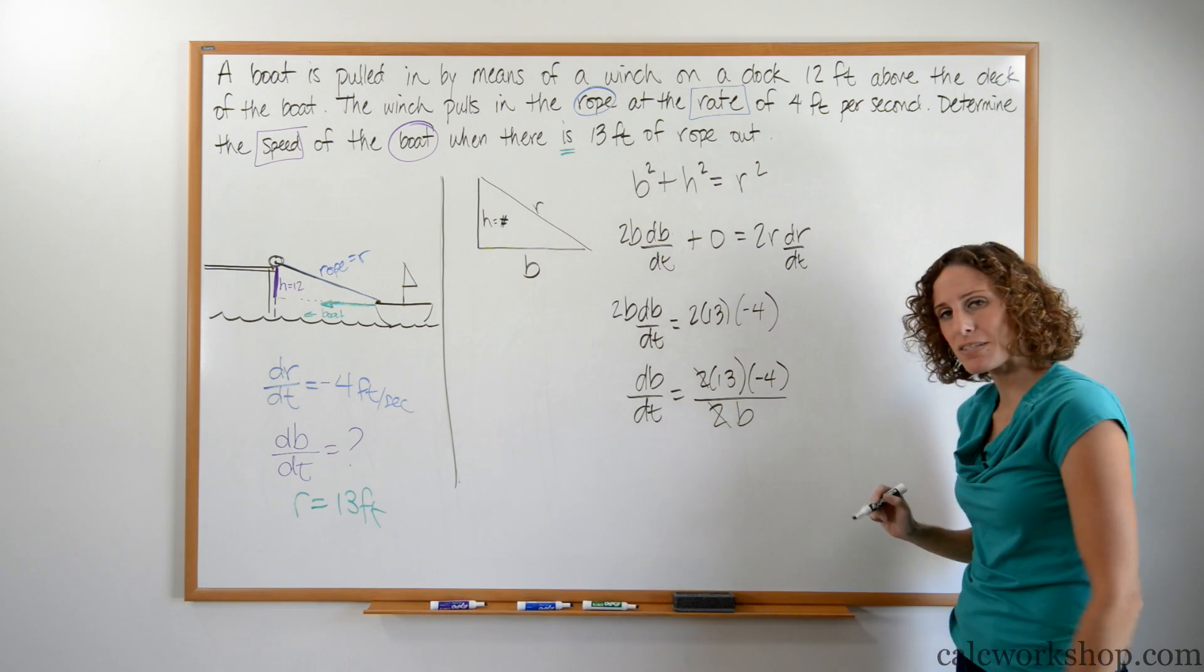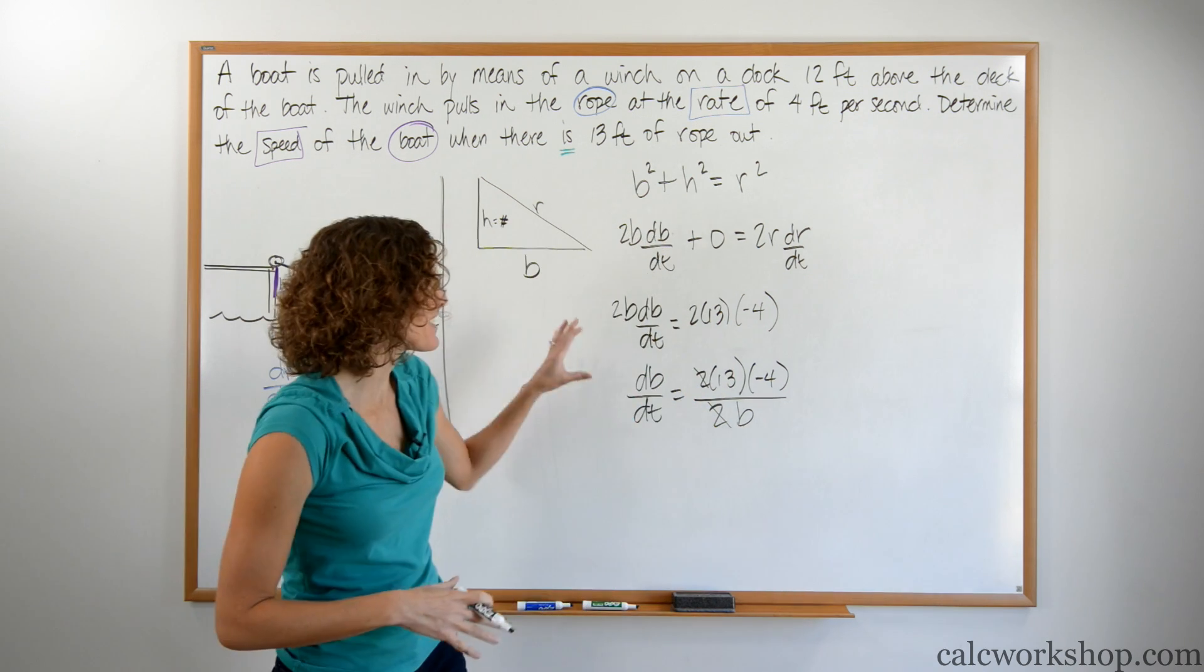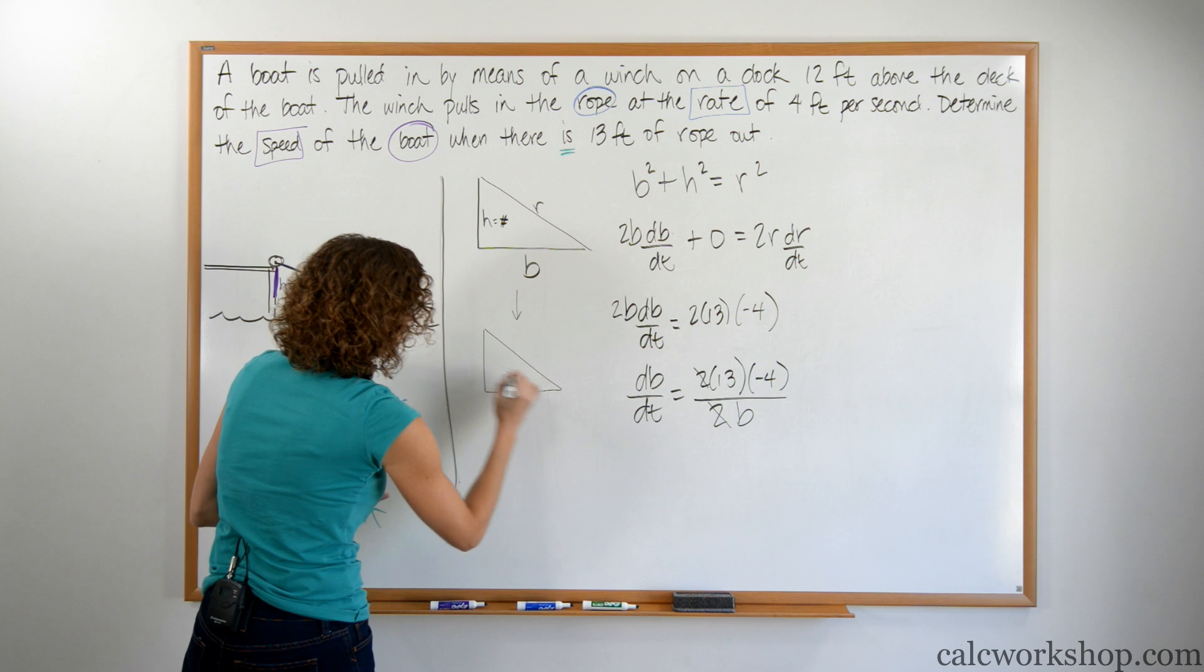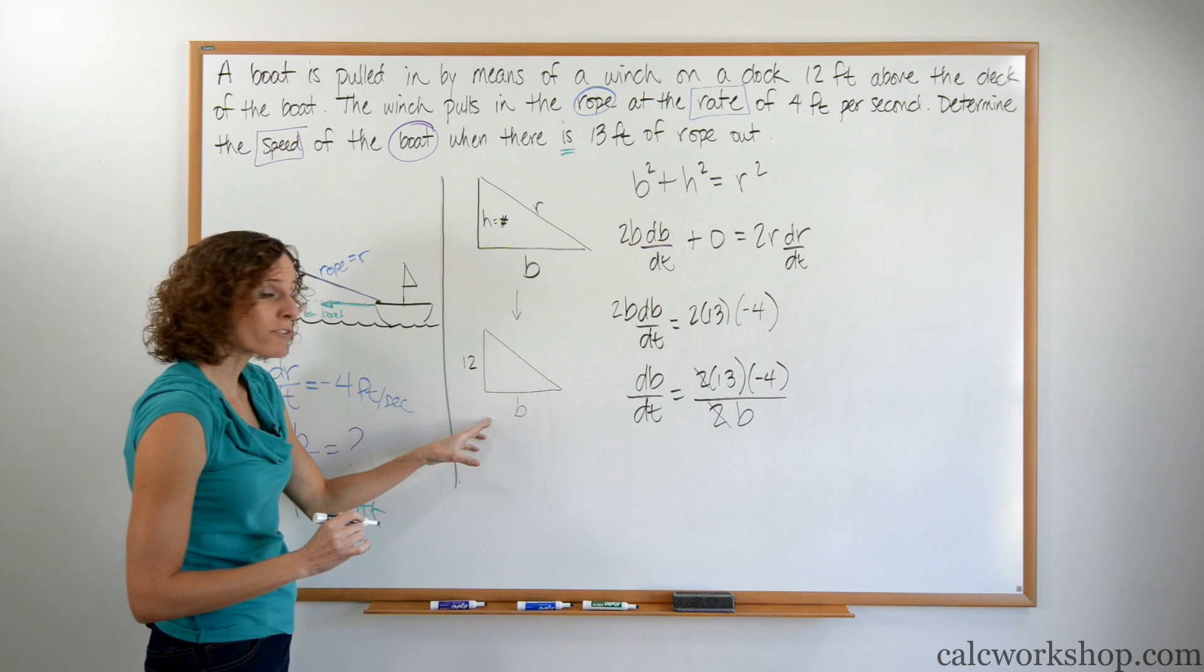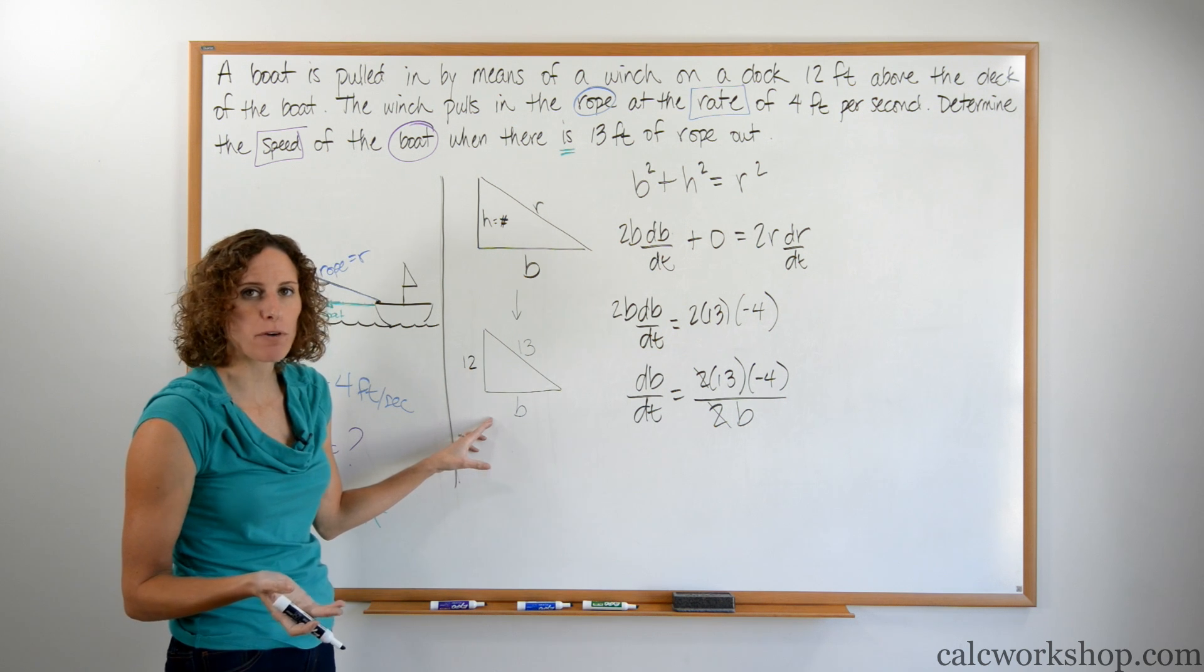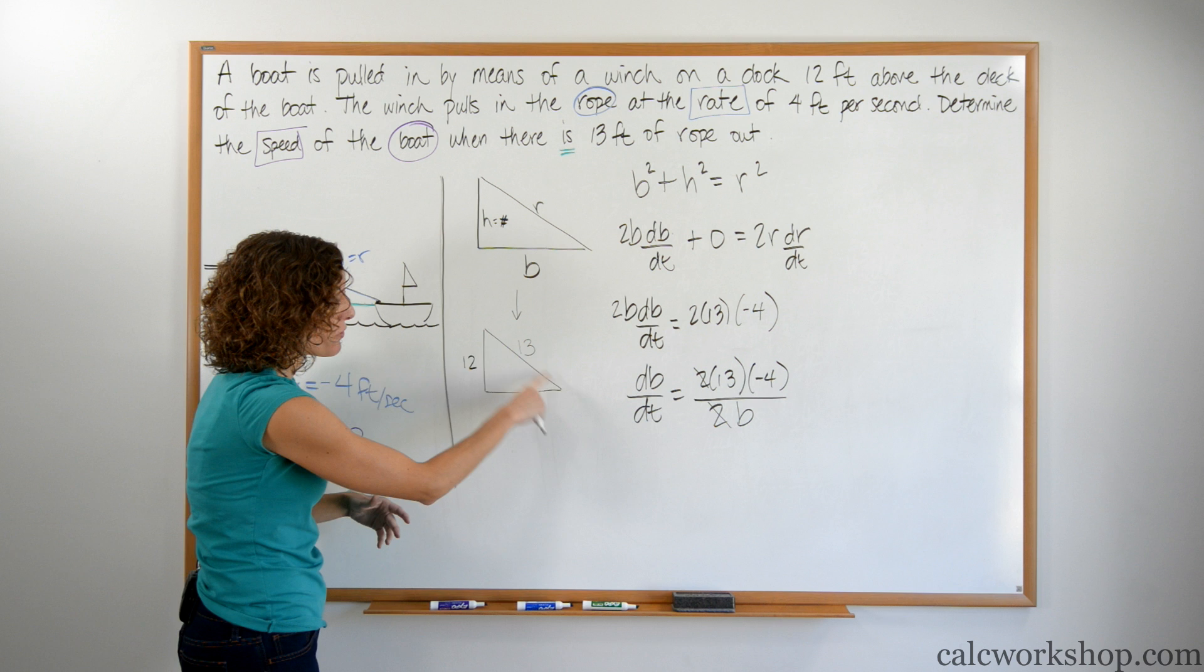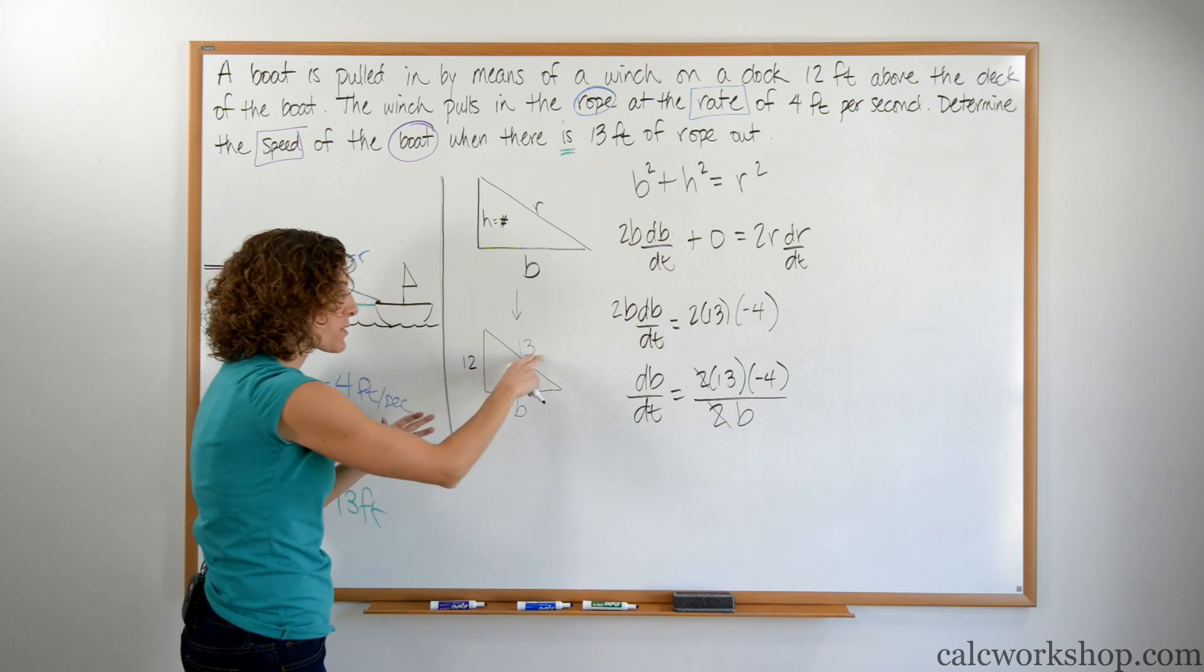Let's solve this problem for db/dt. db/dt is going to equal 2 times 13 times negative 4 all over 2 times b. The 2s can cross out, but I'm still missing a piece of the puzzle. I still don't know what b is. That means we have to remember something. Even though the height was constant and wasn't needed in the derivative, it's going to be important to finding what this is. If we remember that the height was 12, that's going to be important for us to find the missing b. They also told us that they want it at the instant the rope is 13. This number 12 is never going to change. This number 13 could change depending on where the boat is, but at this moment they want it to be 13 feet.